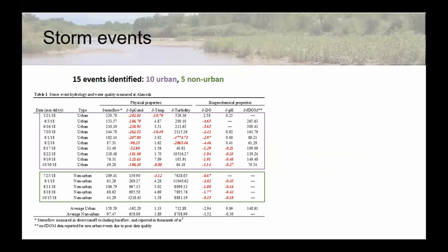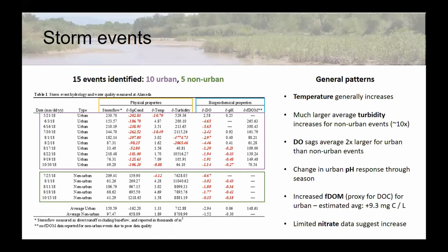We ended up identifying 15 storms for the 2018 monsoon season — 10 urban and 5 non-urban. We have both physical and biogeochemical properties. Physical properties are conductivity, temperature, and turbidity. Biogeochemical properties are DO, pH, and FDOM. In terms of general patterns: temperature generally increases during these storms. We see a way bigger turbidity increase for non-urban events — about 10 times the average of the urban events — which is not super surprising.